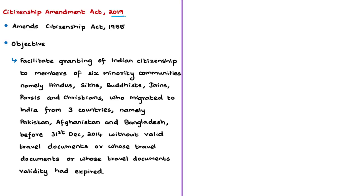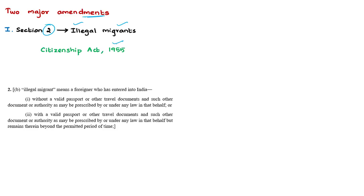The Citizenship Amendment Act of 2019 amended the Citizenship Act of 1955. Its basic objective is to facilitate the granting of Indian citizenship to members of six minority communities — Hindus, Sikhs, Buddhists, Jains, Parsis, and Christians — who migrated to India from three countries, namely Pakistan, Afghanistan, and Bangladesh, up to 31st December 2014. Two important amendments help facilitate and fast-track citizenship: first, Section 2 of the Citizenship Act was amended by inserting a new clause to prevent these persons from being treated as illegal migrants.